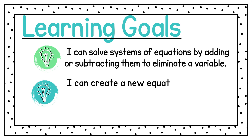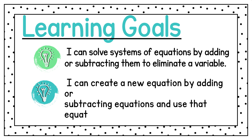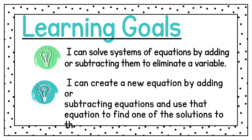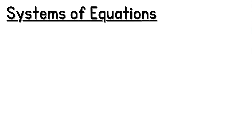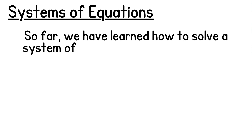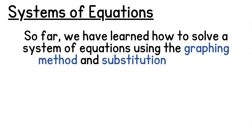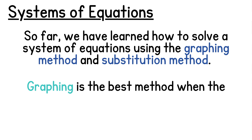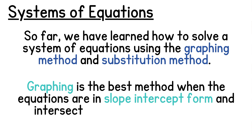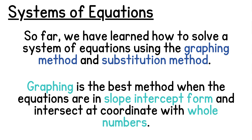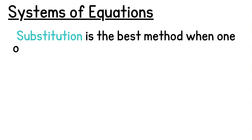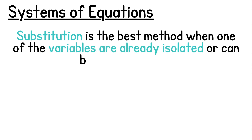You'll also learn how to create a new equation by adding or subtracting equations and using that equation to find the solutions of the original system. So far, we have learned how to solve a system of equations using the graphing method and the substitution method. Graphing is the best method when the equations are in slope-intercept form and they intersect at coordinates with whole numbers. Substitution is the best method when one of the variables are already isolated or can be easily isolated.